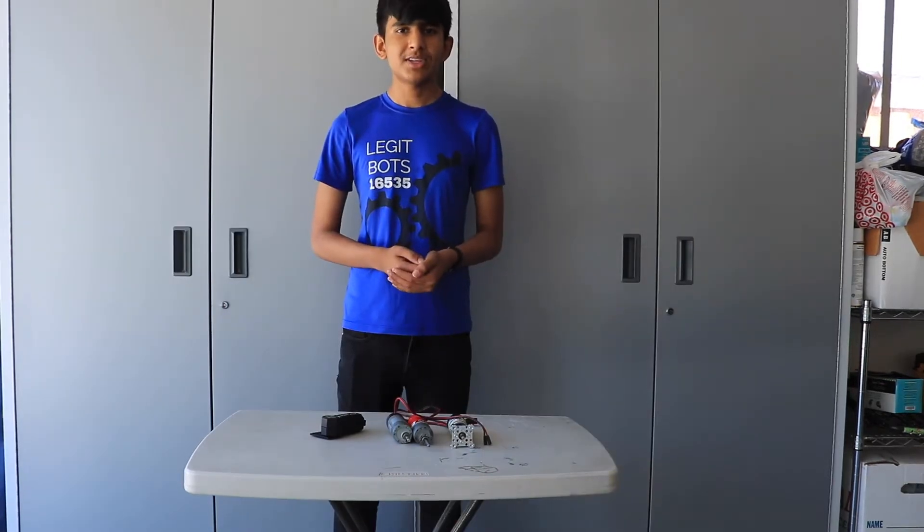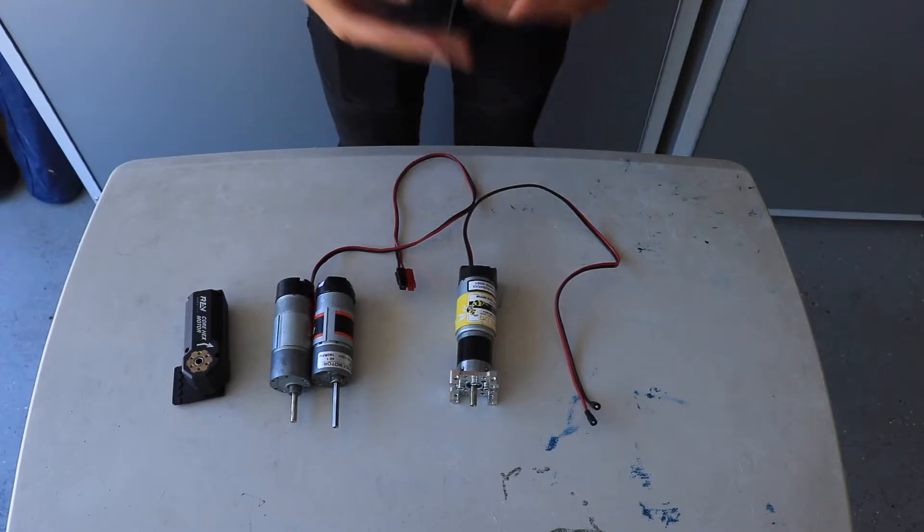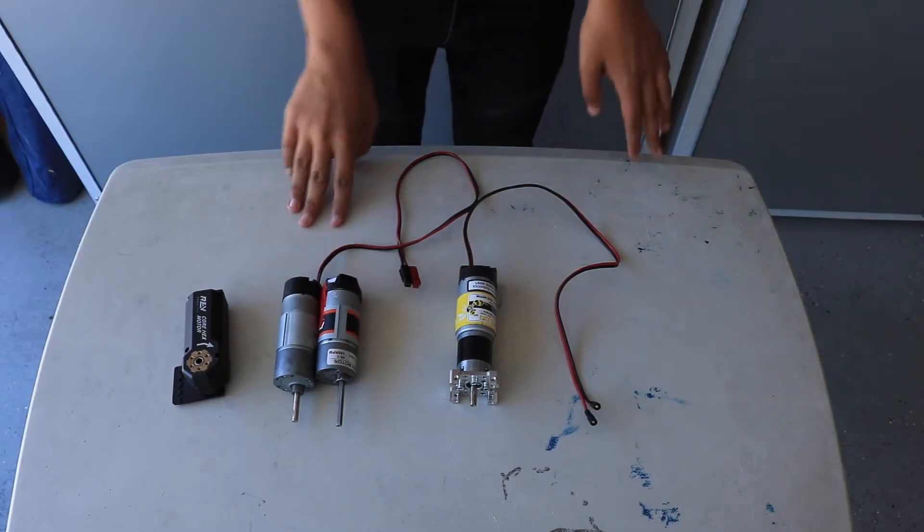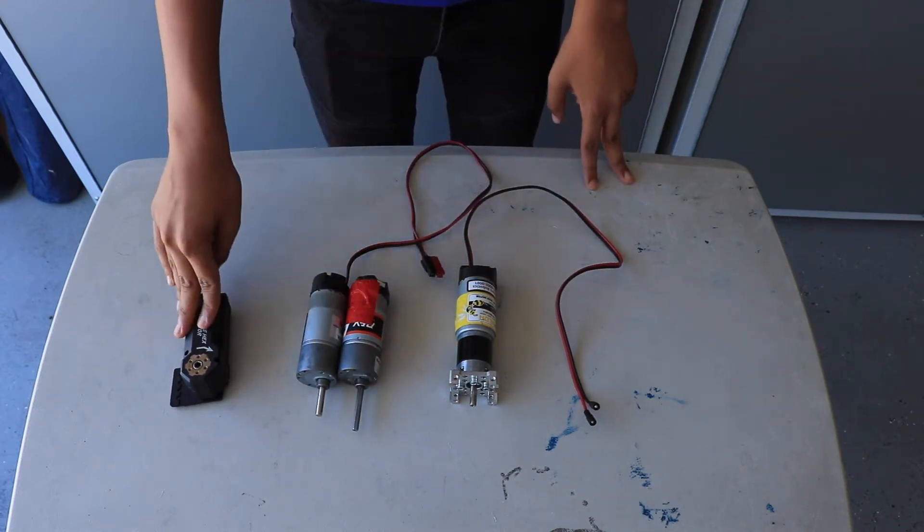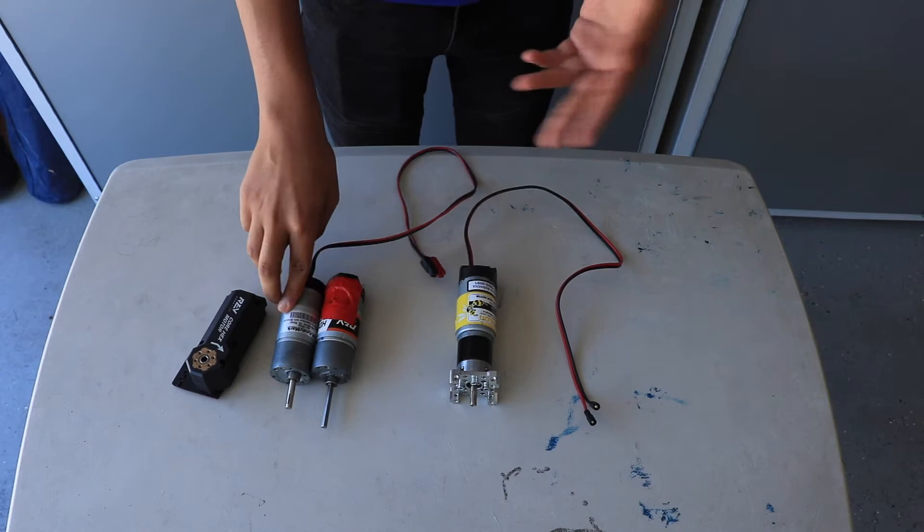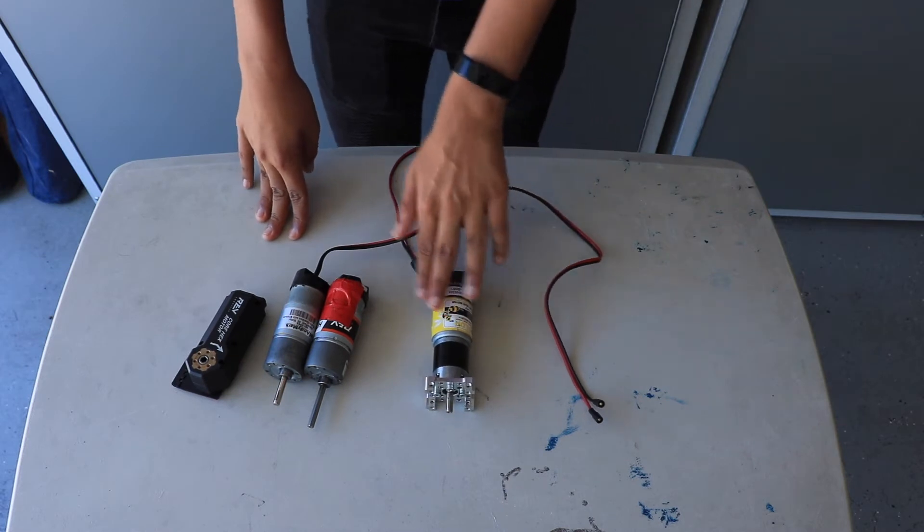Motion transmission in FTC is created using servos and motors. First we're going to talk about motors. We have a few different types of motors here. We have a rev motor, another rev motor, an AndyMark motor, which is another company that makes FTC gear, and we have a GoBuilder motor.